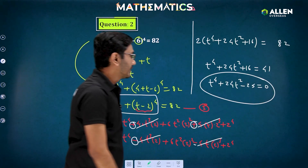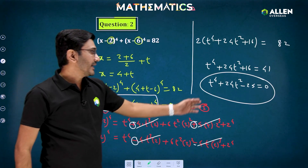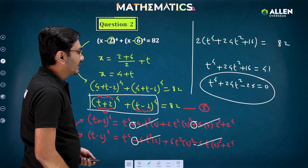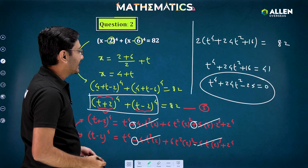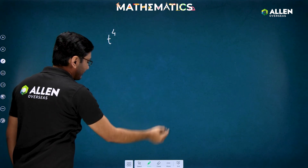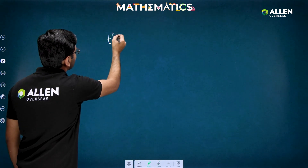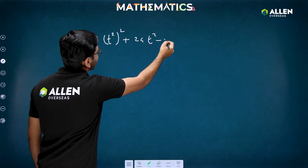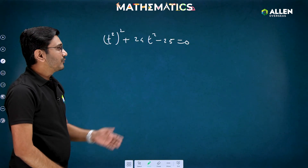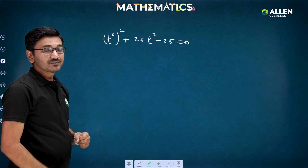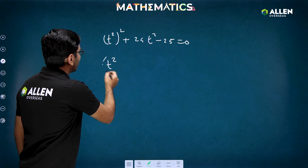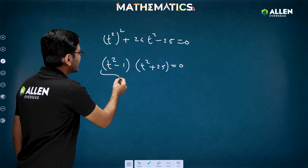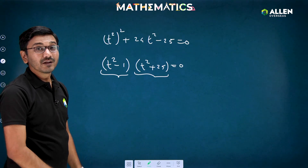This isn't strictly a quadratic — it's a degree-four equation — but we can convert it into quadratic form. Writing t⁴ as (t²)², we have (t²)² + 24t² - 25 = 0. This factorizes as (t² - 1)(t² + 25) = 0, so t² - 1 = 0 or t² + 25 = 0.